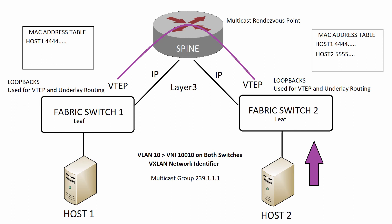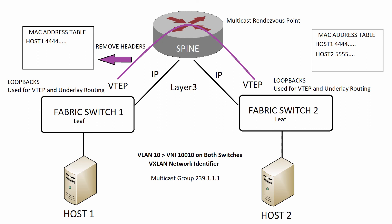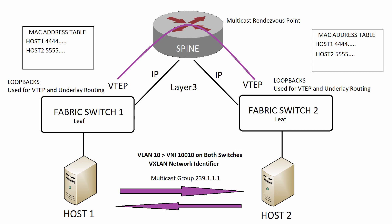When switch 2 sees the reply from host 2, it adds host 2's MAC address to its MAC address table for that interface and forwards the reply via its VTEP. Before forwarding, the frame is encapsulated again with a VXLAN header, UDP header, and IP header. The destination IP is switch 1's VTEP and the source IP is switch 2's VTEP. Because the underlay network routing was correctly configured, it forwards this traffic. Switch 1 receives the packet, decapsulates it, and is able to add host 2's MAC address to its MAC address table, assigning it to the VTEP.